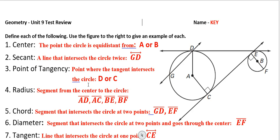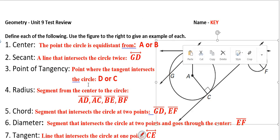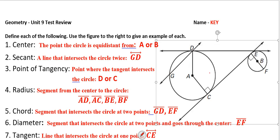We have two centers: A right there and B over there. Then we have a secant — a line that intersects the circle twice. That's this right here; it's a line because it has arrows on it. The point of tangency is where a tangent intersects the circle, so that's point D up here or point C down here.